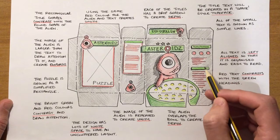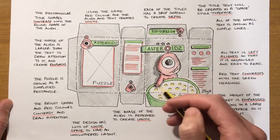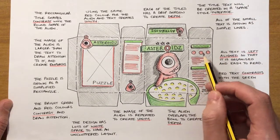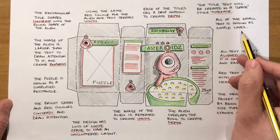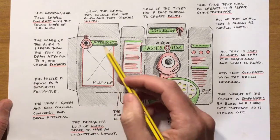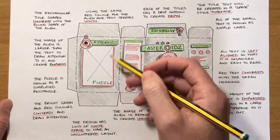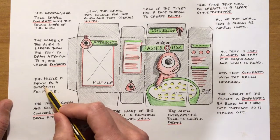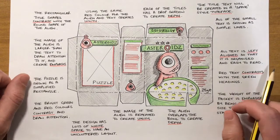I've got little titles for the nutritional information, the address, ingredients, and so on. I've tried to simplify that — rather than writing lots of text or drawing lots of small graphics, I've used little lines to represent the text. I've also simplified the little puzzle graphic at the back, representing it as a rectangle with a cross through it to indicate an image, and I've annotated that and explained my decision.